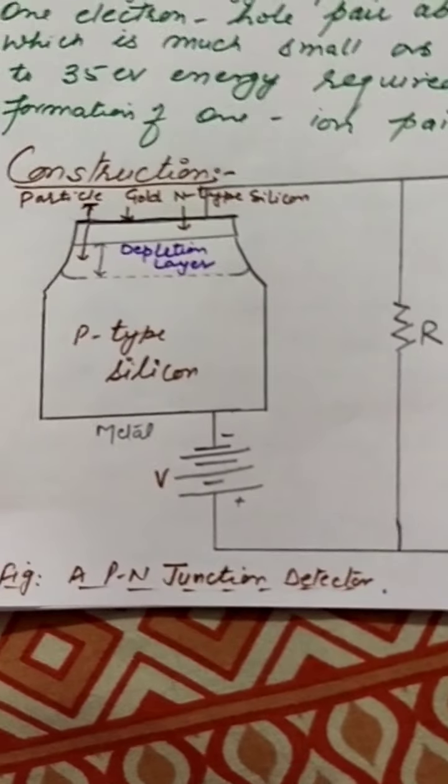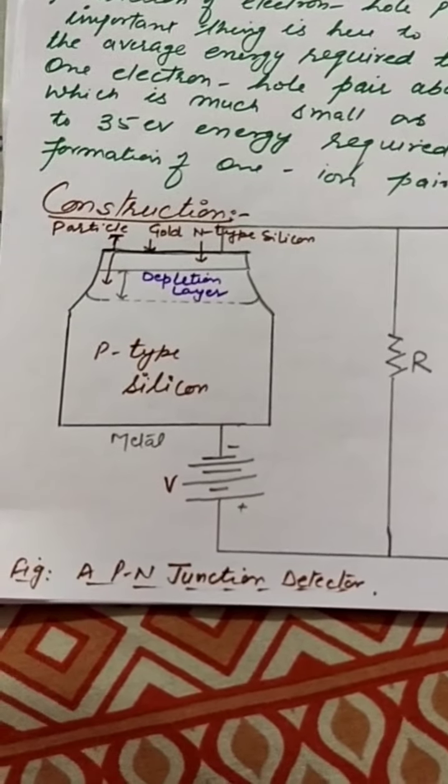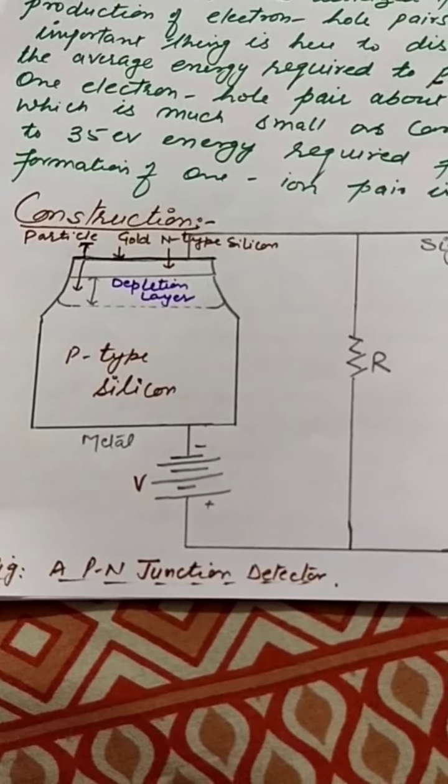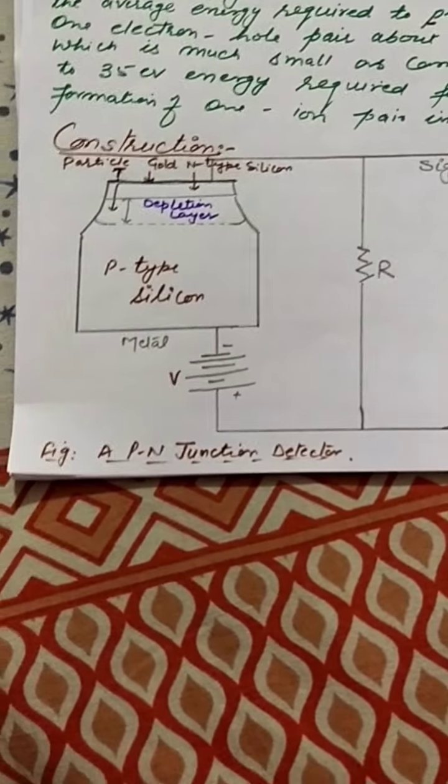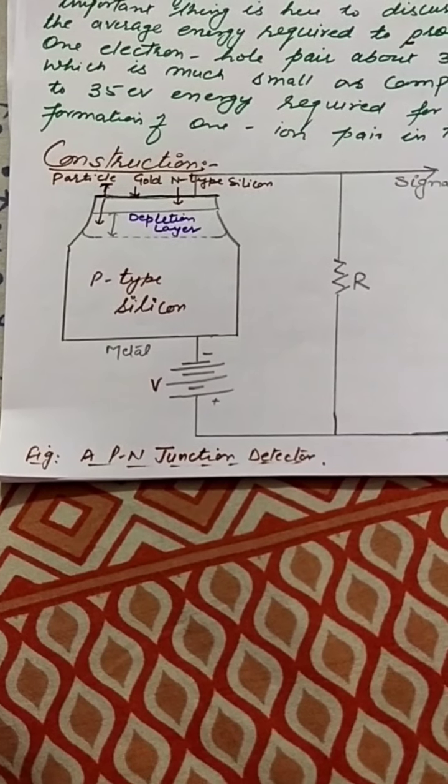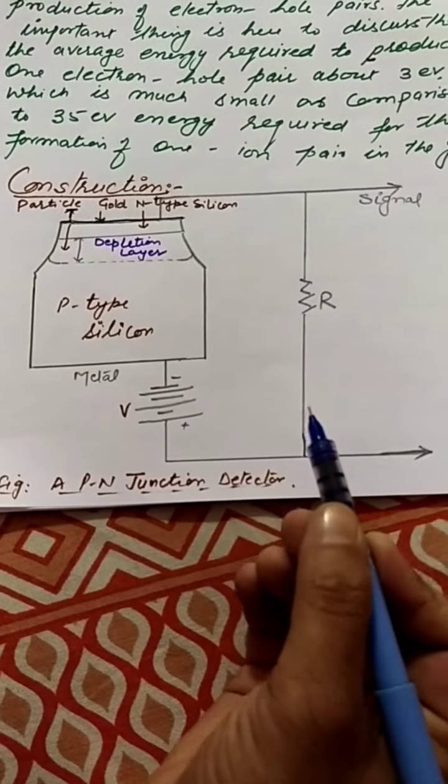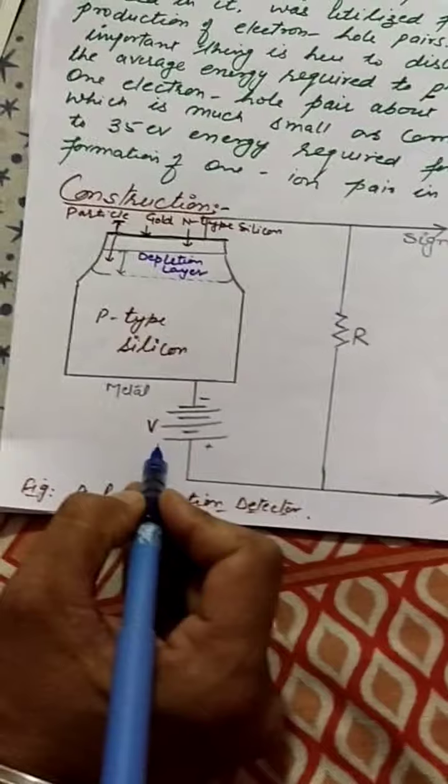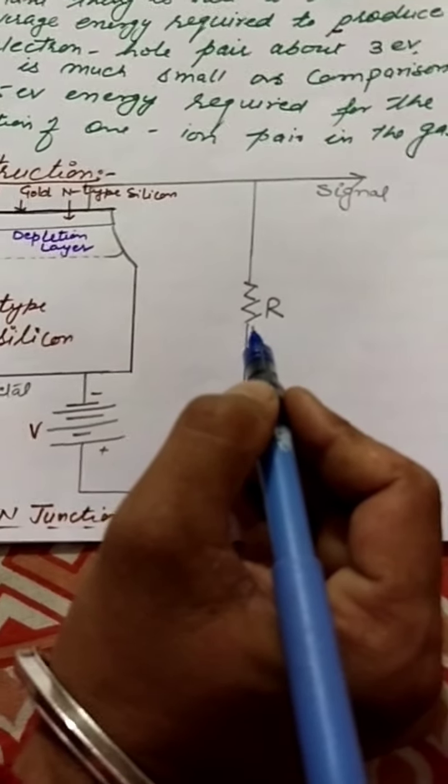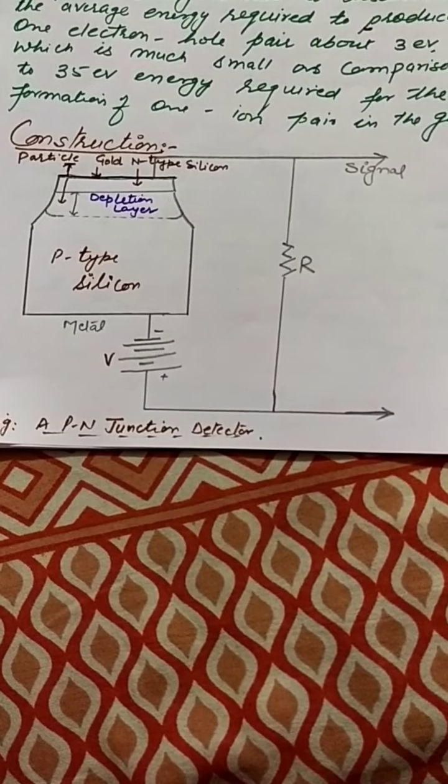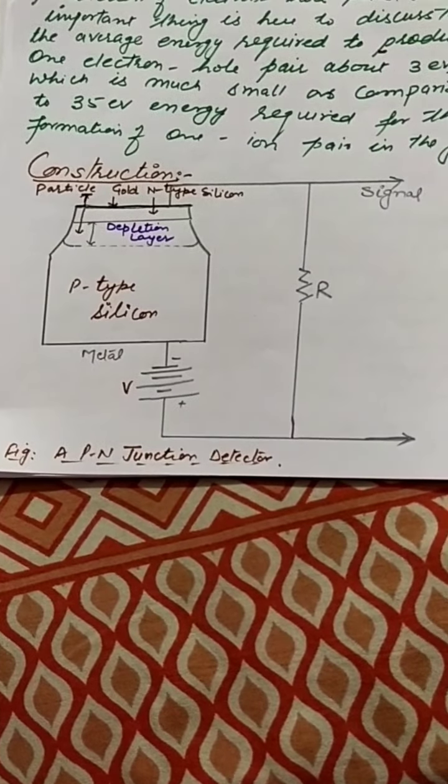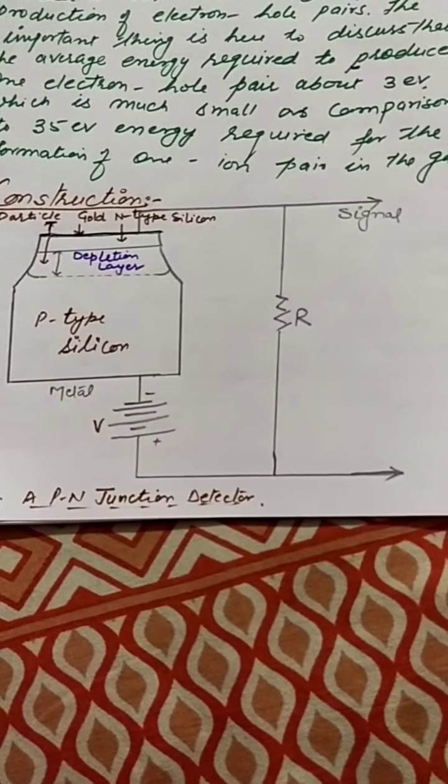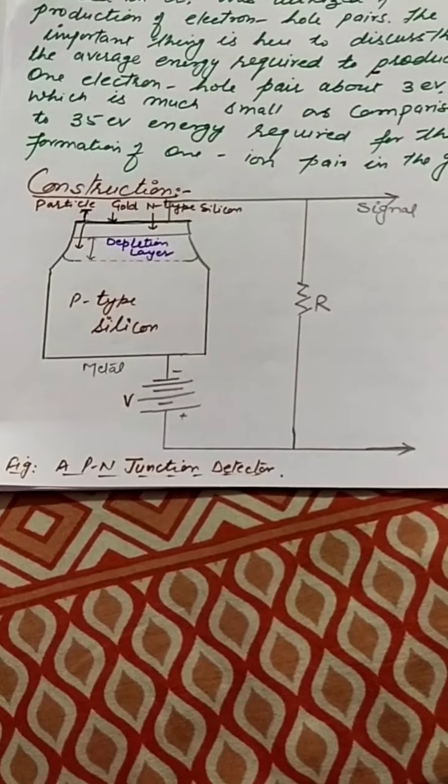When an energetic charged particle moves through the depletion layer, its interaction with electrons in the crystal produces electron-hole pairs. One electron-hole pair is produced for every 3.5 electron volts of energy lost by the charged particle in case of silicon. The electrons and holes are swept away by the applied electric field and are registered through a voltage across the resistor R. The number of charge carrier pairs produced in a semiconductor material is approximately 10 times as large as the number of ion pairs produced in a gas ion chamber.